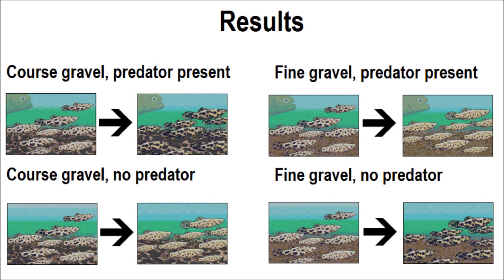So much for spot number. Spot size tells an equally interesting story. In the presence of predators, whether weak or strong, coarse gravel promoted relatively larger spots, while fine gravel favoured relatively smaller spots. This is easily interpreted as spot size mimicking stone size. Fascinatingly, however, in the ponds where there were no predators at all, Endler found exactly the reverse. Fine gravel favoured large spots on male guppies, and coarse gravel favoured small spots. They are more conspicuous if they do not mimic the stones on their respective backgrounds, and that is good for attracting females.